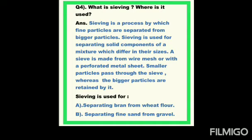Where is sieving used? Answer: Sieving is a process by which fine particles are separated from bigger particles. Sieving is used for separating solid components of a mixture which differ in their sizes — one smaller and one bigger.